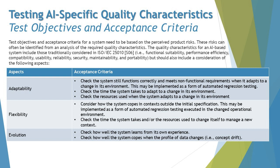Similarly, when it comes to evolution — which is about transforming over a period of time — acceptance criteria include: check how well the system learns from its own experiences, and check how well the system copes when the profile of the data changes, which is like concept drift. These are some examples of acceptance criteria for evolution.